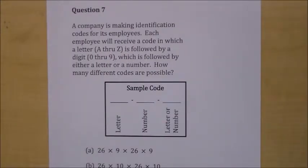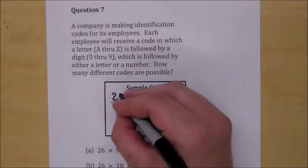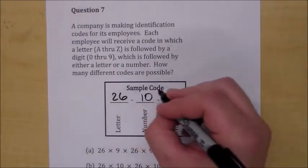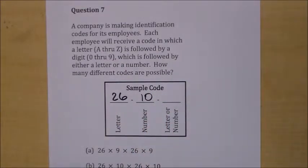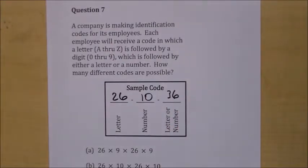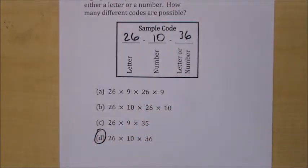Question seven: a company is making identification codes for its employees. Each employee receives a code where a letter A through Z is followed by a digit zero through nine, which is followed by either a letter or a number. How many different codes are possible? You have 26 choices for the first item, 10 choices for the digit, and 36 choices for the last position (26 letters + 10 numbers). You just multiply those three numbers together.